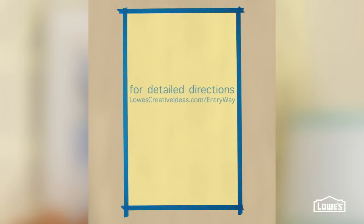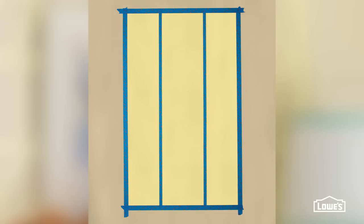When you're laying out the graphic, just refer to the detailed directions for the measurements for the tape placement. Start by dividing the space into three columns by adding these two full-length verticals of tape.